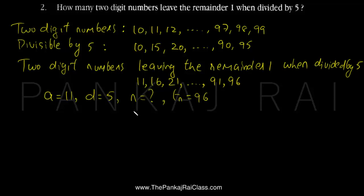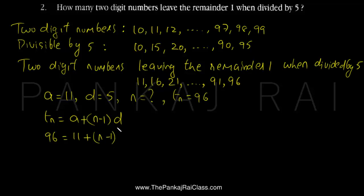It's very simple. We can use the formula for t_n which is a + (n - 1) × d. So t_n, which is the nth term, the last term, is given as 96. a, the first term, is 11, and d, the common difference, is 5. So we have 96 = 11 + 5(n - 1), which gives 96 = 11 minus 5 + 5n, that is 6 + 5n.